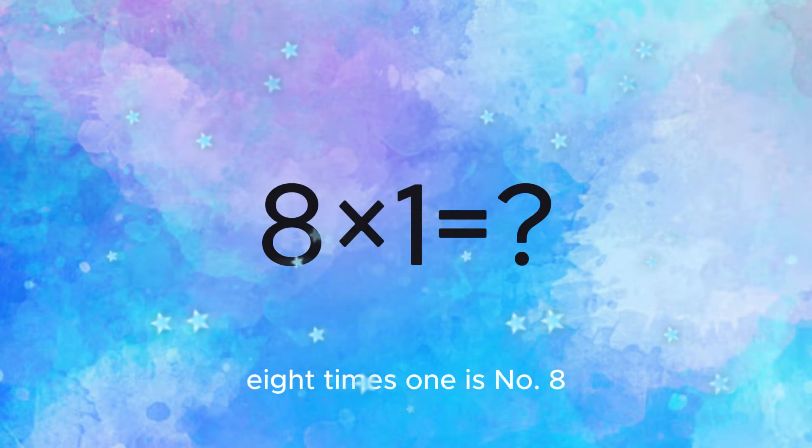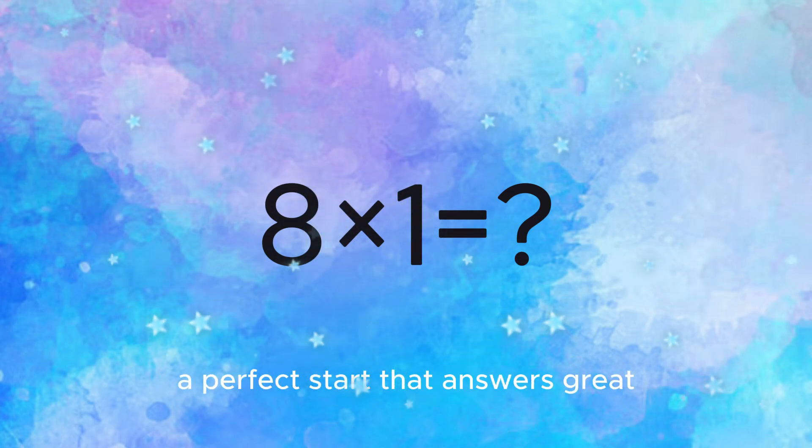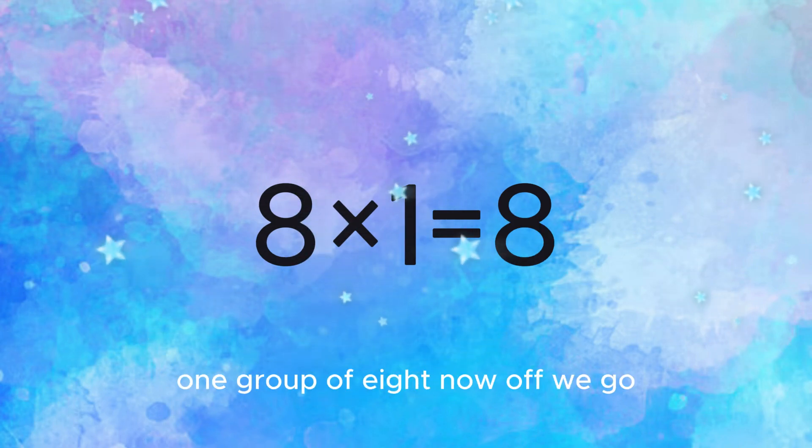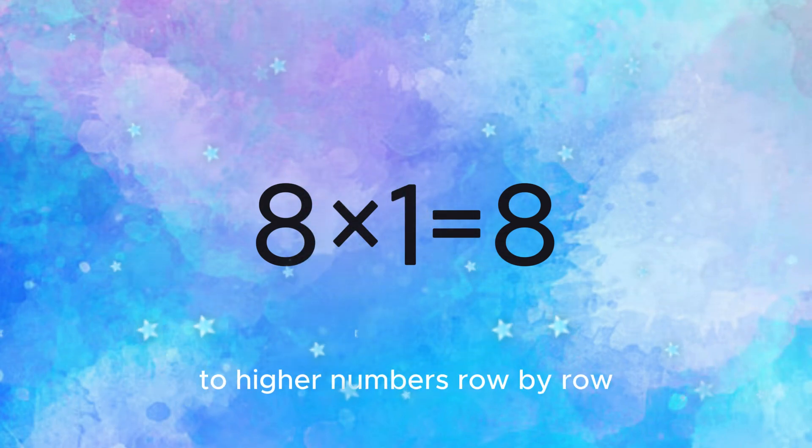8 times 1 is number 8. A perfect start, that answer's great. One group of 8, now off we go. Two higher numbers row by row.